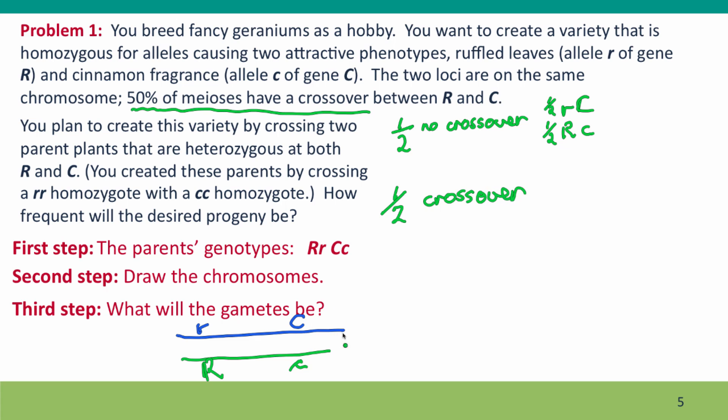And in those meiosis, we're still going to get two, half of the time, half of the gametes will have the parental genotypes. So of these, a quarter are going to be little r, big C and a quarter are going to be big R, little c. The other half will be the chromatids that participated in the crossover. And they'll be recombinant. So we'll have a quarter, big R, big C and a quarter, little r, little c.